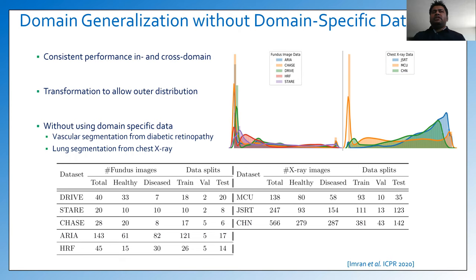We performed a segmentation task for two particular applications: retinal vessel segmentation from fundoscopic images and lung segmentation from chest X-ray images. Here you can see the disparity in the distributions among five different fundoscopic image datasets and three different chest X-ray datasets used in our experiment. In order to ensure out-of-sample distribution, we employed a transformation function that transforms input examples by applying different geometric transformations, and the transformed examples are passed to the model without any label information.